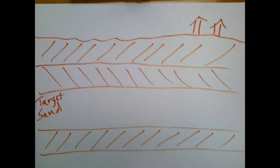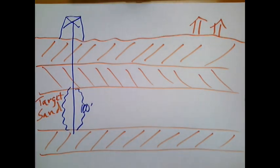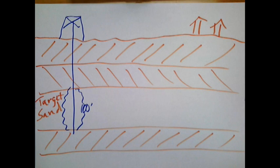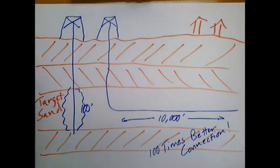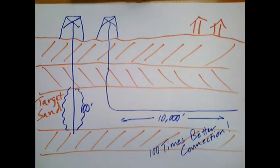First, we drill horizontally instead of vertically to increase our connection to the reservoir. A vertical well drilled through a 100-foot thick sand will have a 100-foot connection, while a 10,000-foot horizontal well will have a 100 times better connection to the reservoir.